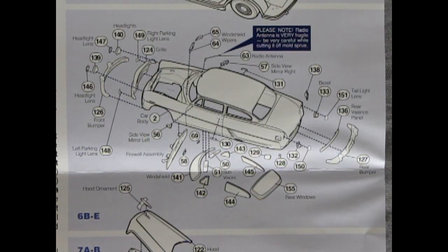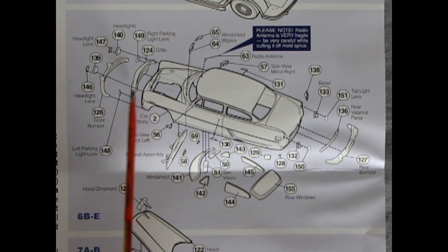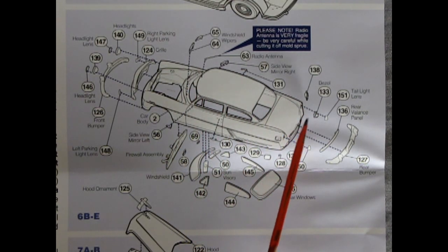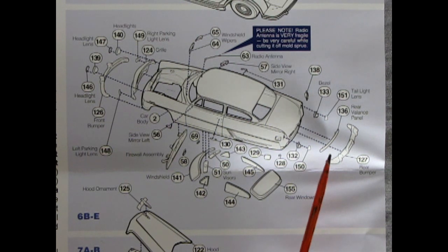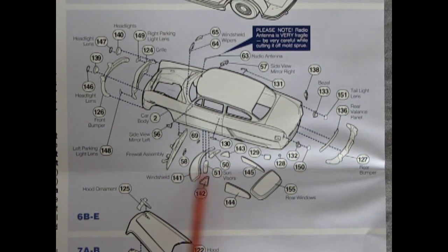Then we continue on with our body by putting in the firewall underneath as well as our chrome grille and bumper, headlights and all the little door handles and mirrors and tail lamps and everything else that make up this kit including the rear bumper and the molding on the back. And then we have our windows and our sun visors going in as well.